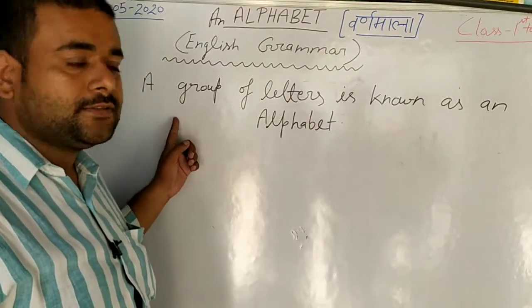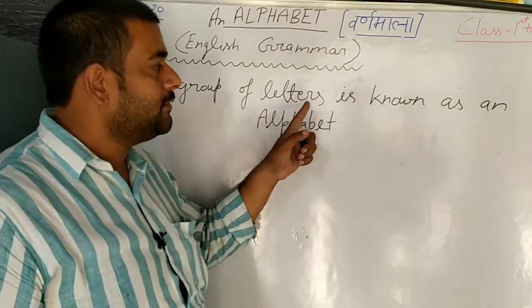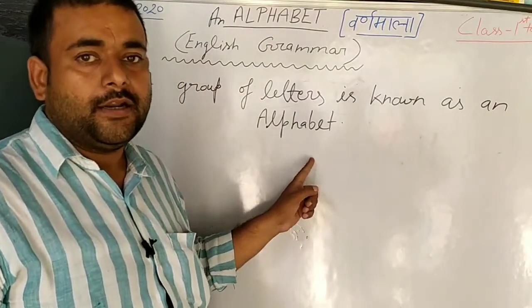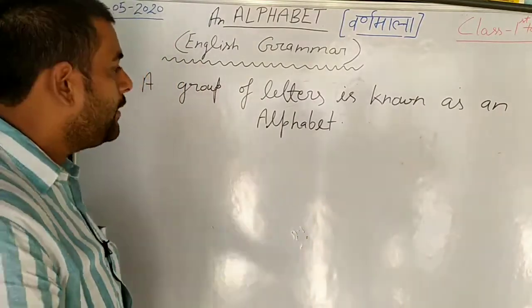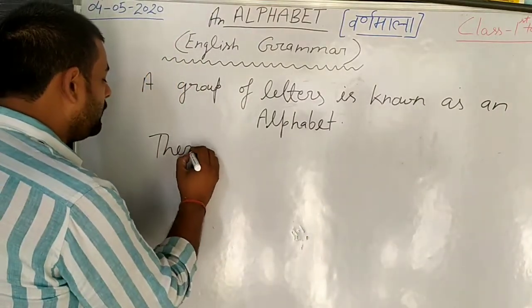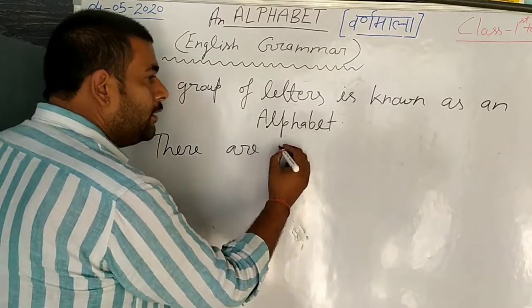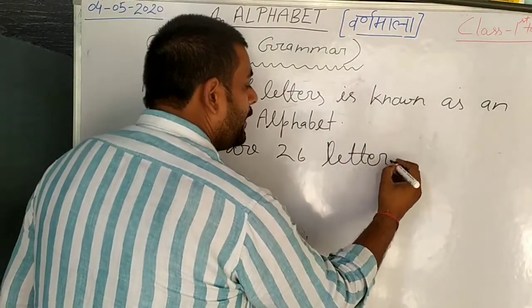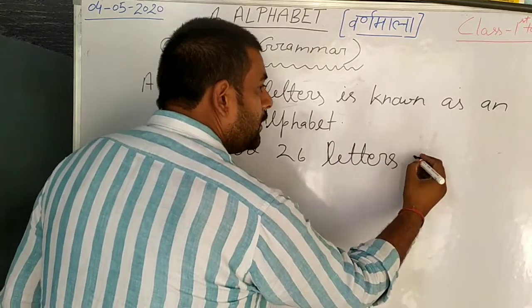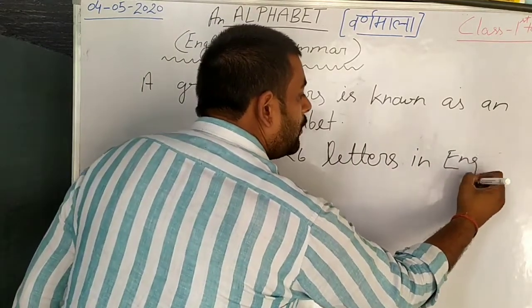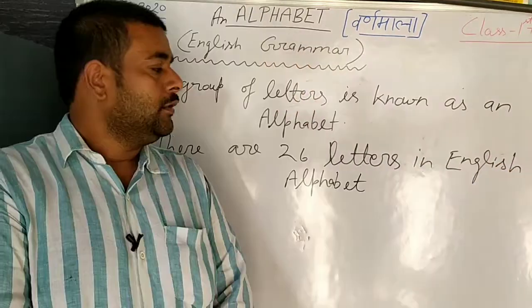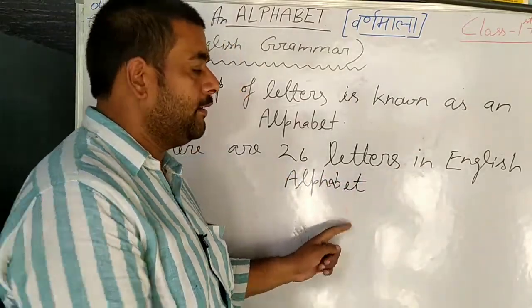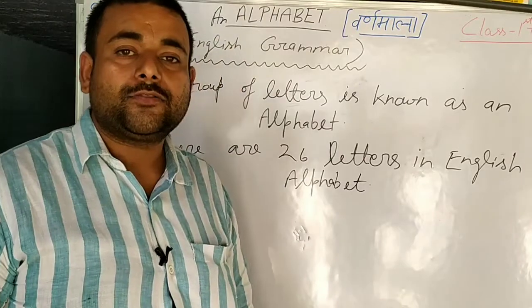Listen children, a group of letters is known as an alphabet. It means there are 26 letters in English alphabet. Understood?